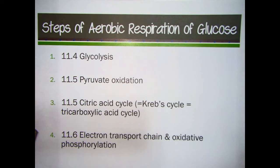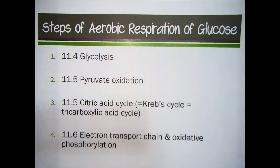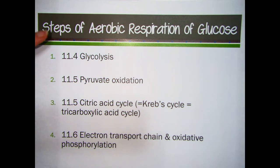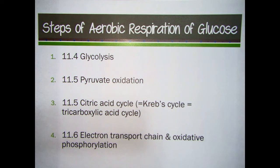So these are the steps of aerobic respiration of glucose. We are going to start with glucose because everybody starts with glucose — it's really well characterized. And once you know the steps for glucose, you can pretty much fit any other nutrient into the process. We will do that later, but we're going to start with glucose. We will learn these four steps, and these are the sections in the text where you will find additional information about each step should you need it.